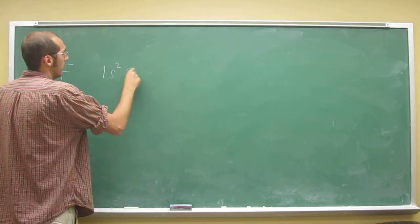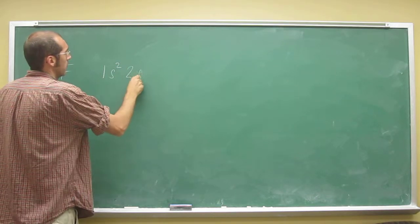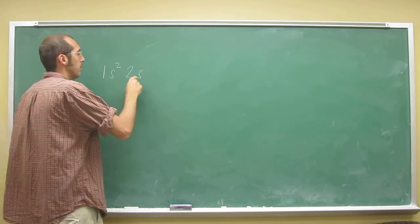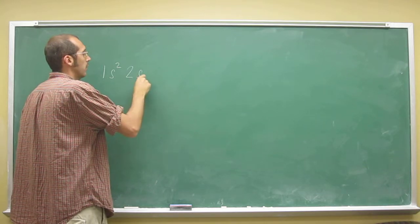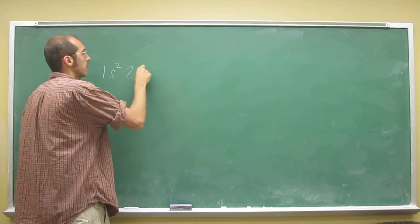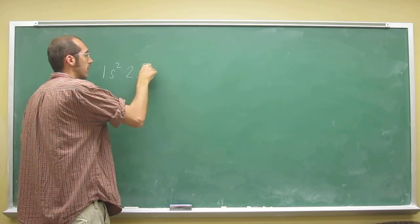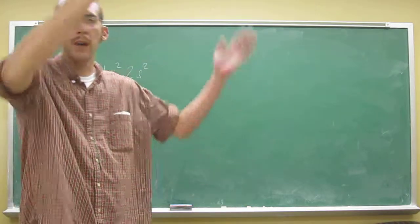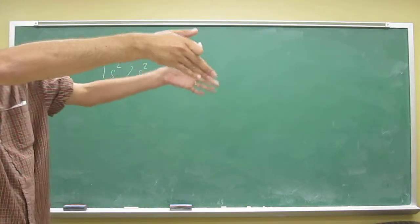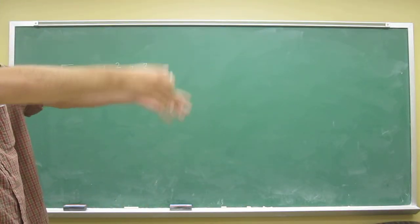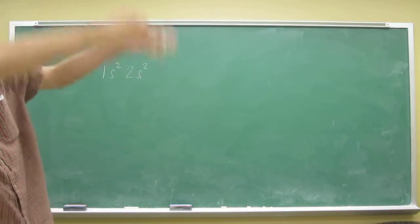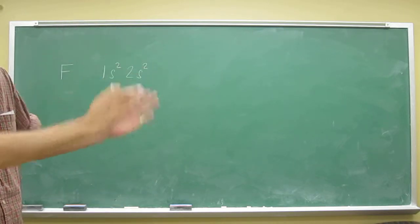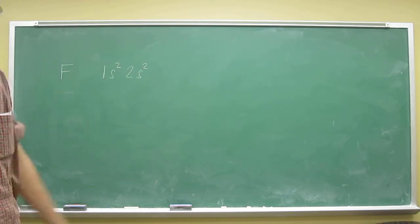Then the next energy level is n=2. So 2s2 — two electrons can fit in there. This is why the left side of the periodic table, those two columns sticking up, is called the s block.